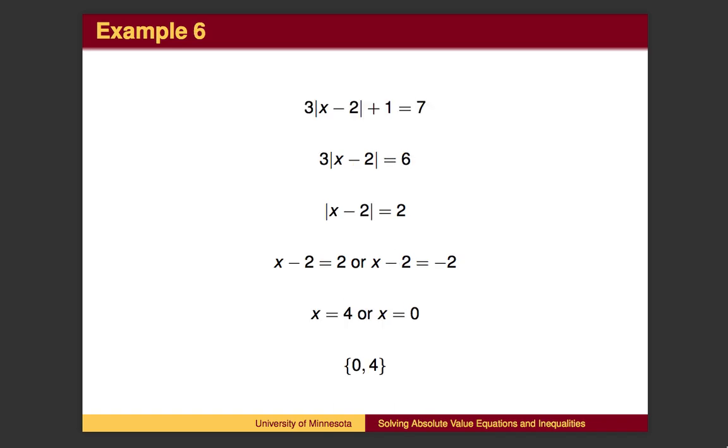Here, we first subtract 1, then divide by 3. This isolates the absolute value. We then solve the absolute value problem in the standard way.